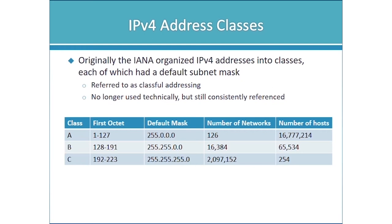The class of an address was defined by the value in the first octet, and the class defined the default mask. Because the subnet mask differentiates between network ID and host ID, it determines how many bits are available for network IDs and how many for host IDs. The more bits available, the more potential IDs.